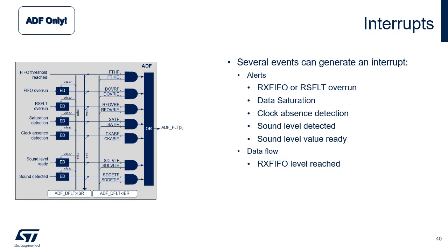This figure details the ADF interrupt management. Alert events and data flow events can generate an interrupt. Alert events are RxFIFO or RSFLT overrun, data saturation, clock absence detection, sound level detected, and sound level value ready. Data flow event is RxFIFO level reached.